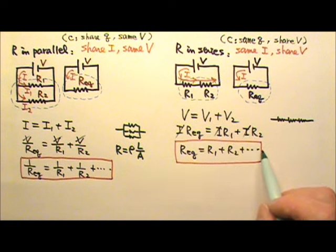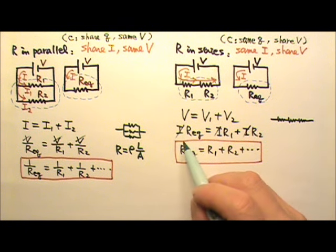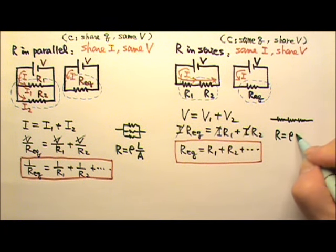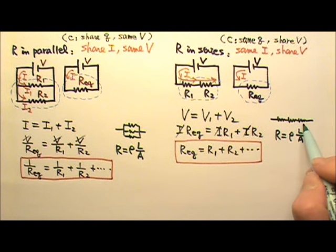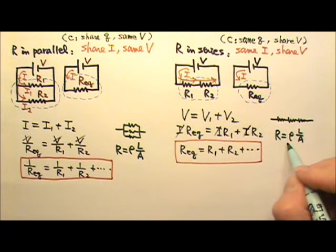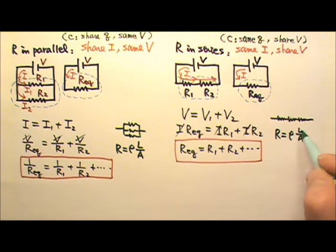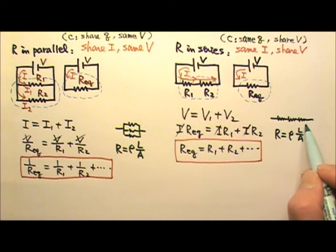This also tells us that the more resistors we have in series, the larger the equivalent resistance. It's kind of like this: R equals rho times L over A for a wire. When we have more resistors in series, it's like the wire is longer. The longer the wire, the larger the resistance. So the more resistors we have connected in series, the larger the equivalent resistance.